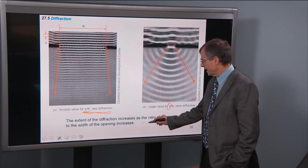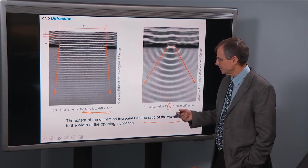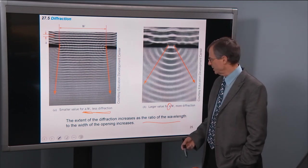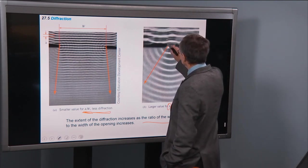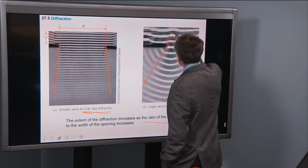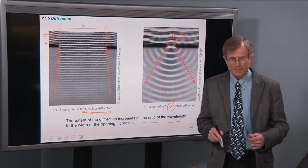So the extent of diffraction increases as the ratio of the wavelength to the width of the opening decreases. In this diagram, we're using W to represent the width of the opening. That's this here. Later, we'll use capital D as we did in chapter 17.